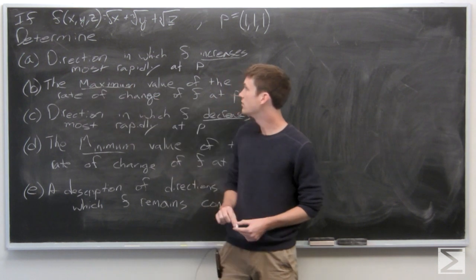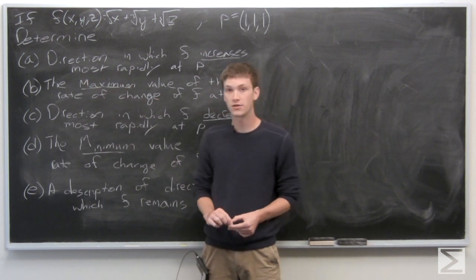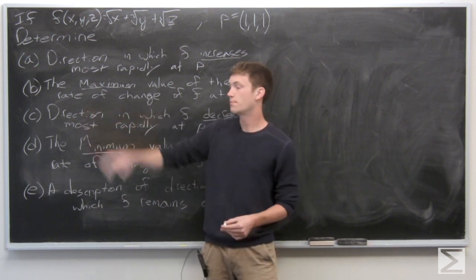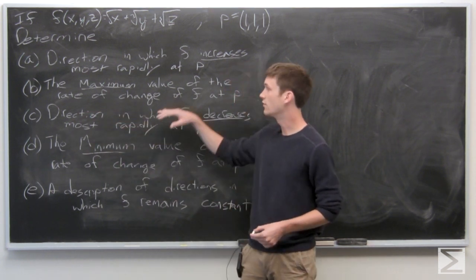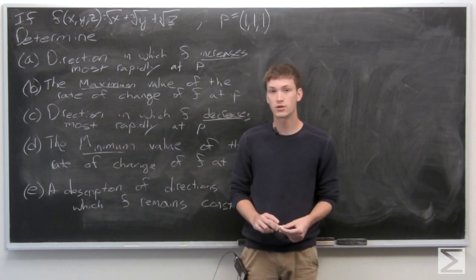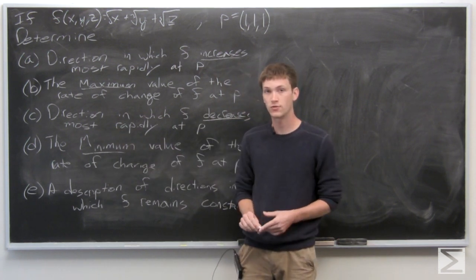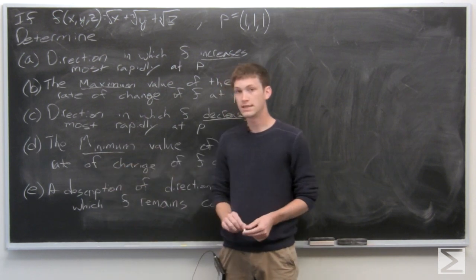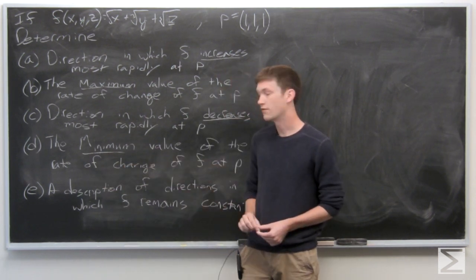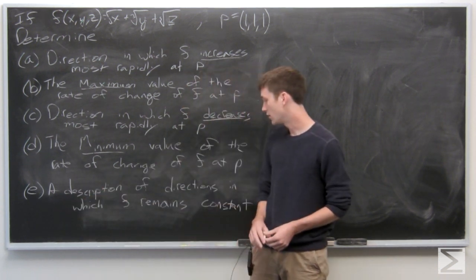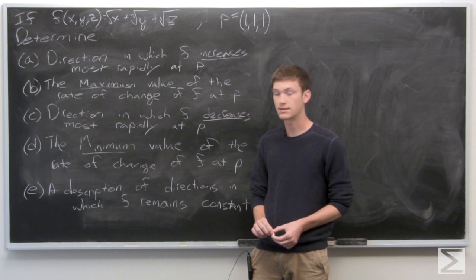Part a: the direction in which f increases most rapidly at p. Part b: the maximum value of the rate of change of f at p. Part c: the direction in which f decreases most rapidly at p. Part d: the minimum value of the rate of change of f at p. And part e: a description of the directions in which f remains constant.